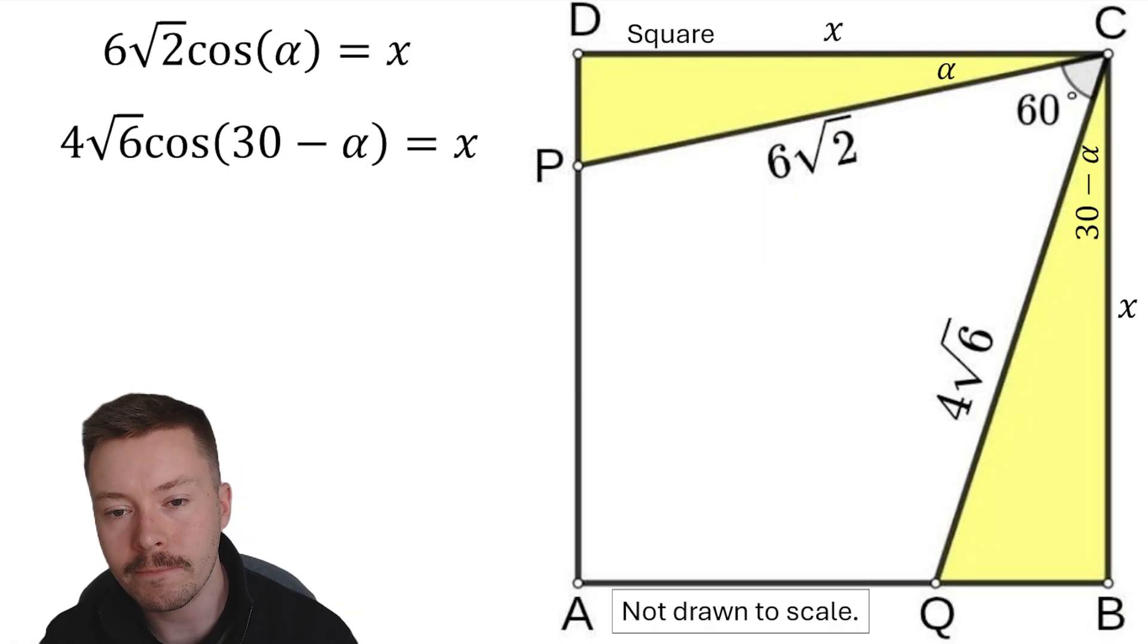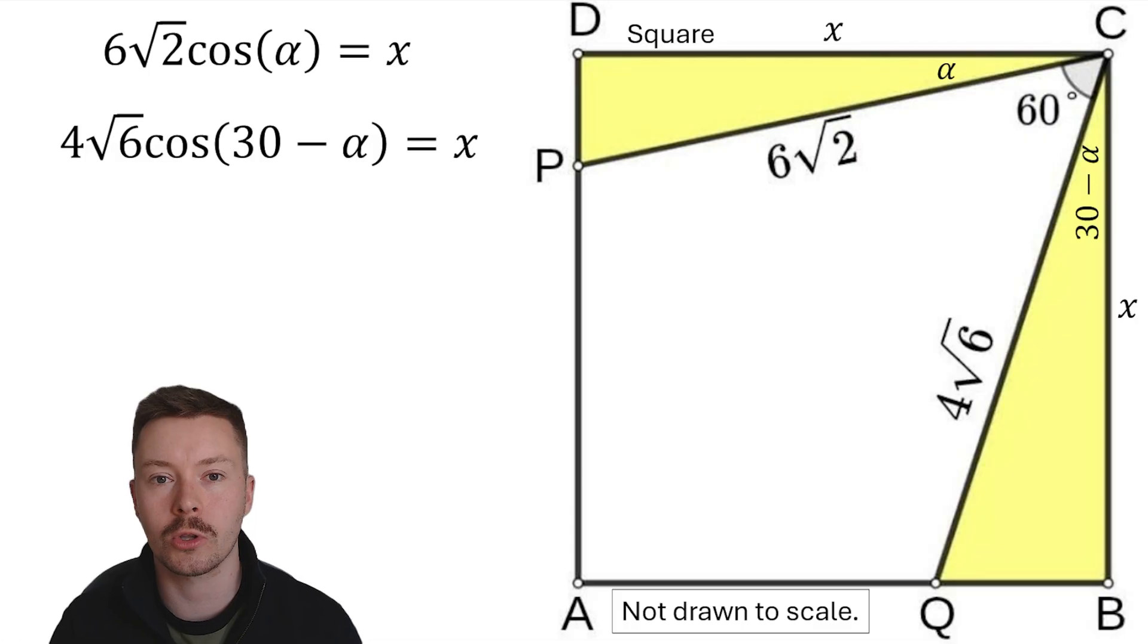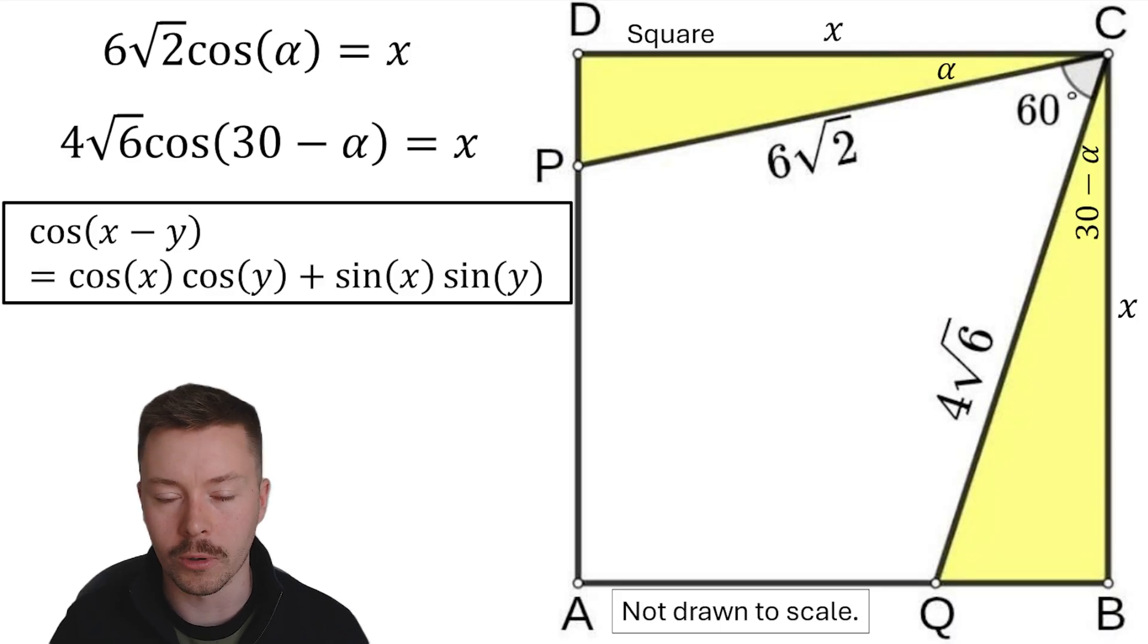From there, I could put them equal to each other because they're both equal to x. However, I want to sort out this cos 30 minus alpha first, and I'm going to do that using this identity. Cos of x minus y is equal to cos x cos y plus sine x sine y. It's an identity, not a formula.